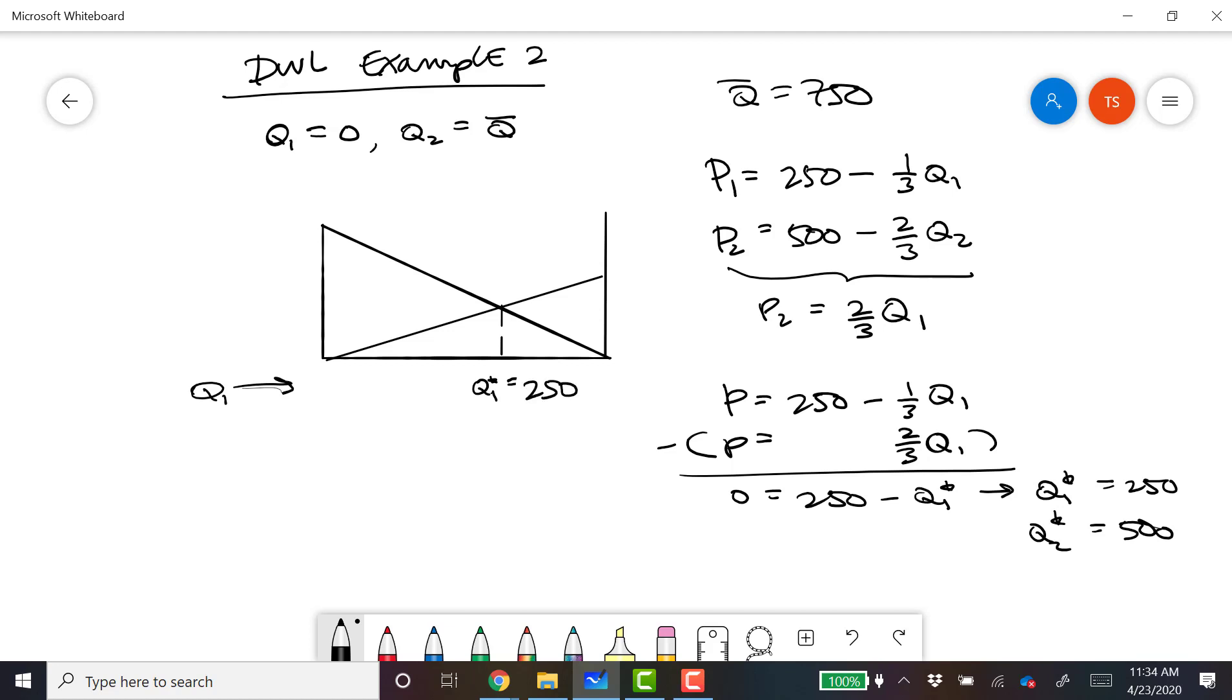So in this scenario, if they're allocated zero, then the deadweight loss is this whole triangle right here. So there's my sloppy triangle. We'll just have to live with that. So the deadweight loss is literally this entire area in this case. So we have a base of Q1 star. This is from zero to A. Pretty straightforward.